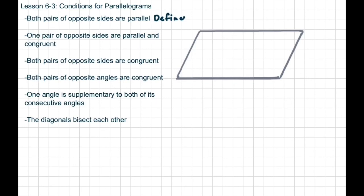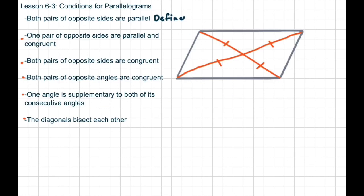The last requirement is that the diagonals bisect each other, which means they basically just cut each other in half. So if I have two diagonals inside a parallelogram, they would be cutting each other in half. So I need at least one of these requirements to make sure that my shape is actually a parallelogram.